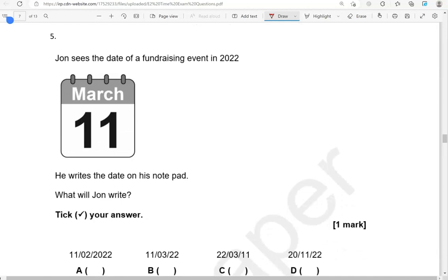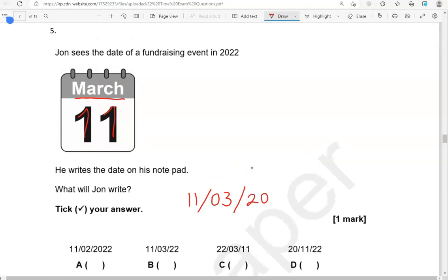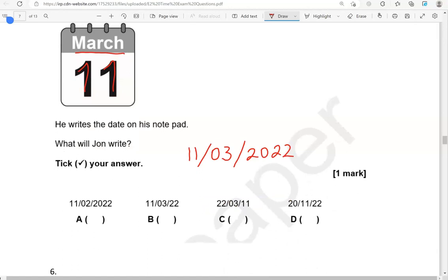John sees the date of a fundraising event in 2022, which is 11th of March. He writes the date on his notepad. What will John write? Tick your answer. March is the third month of the year. So, we're looking for 11th of March. And the year is 2022. Where do we have a match? That's option B.